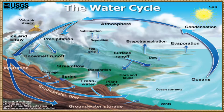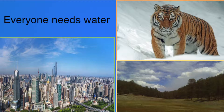The global hydrologic cycle is the circulation of water around the globe, with evaporation from the oceans, precipitation, evapotranspiration, surface flow, and groundwater flow. People, animals, and plants all use water.